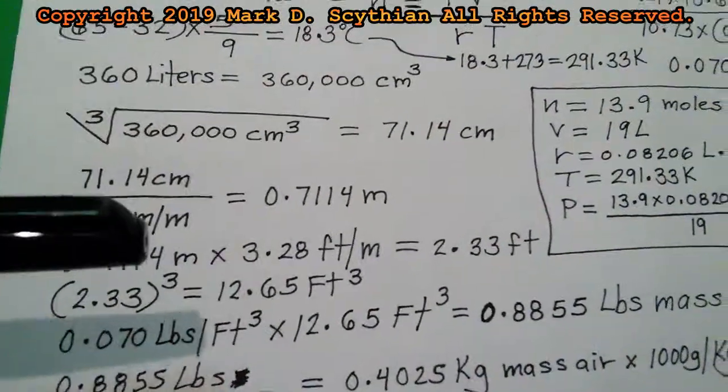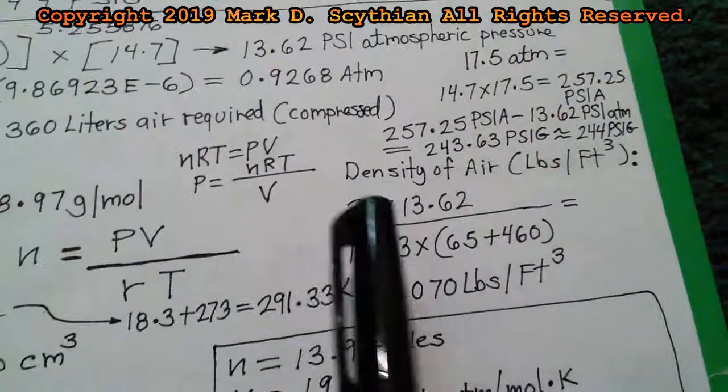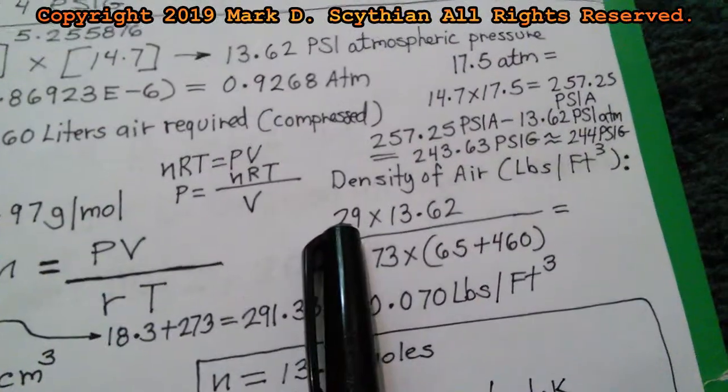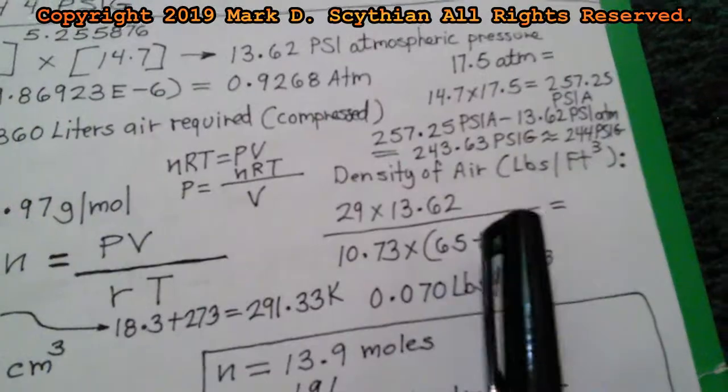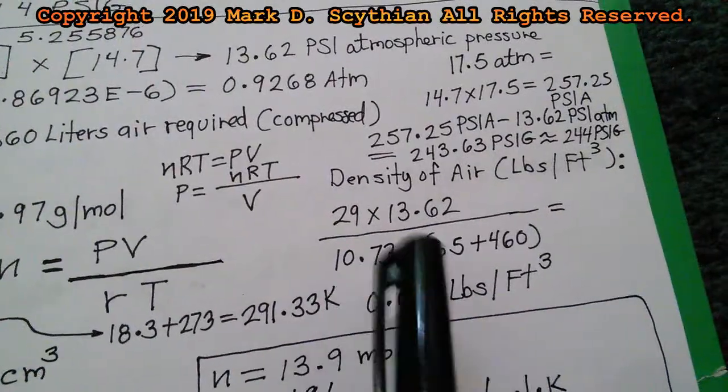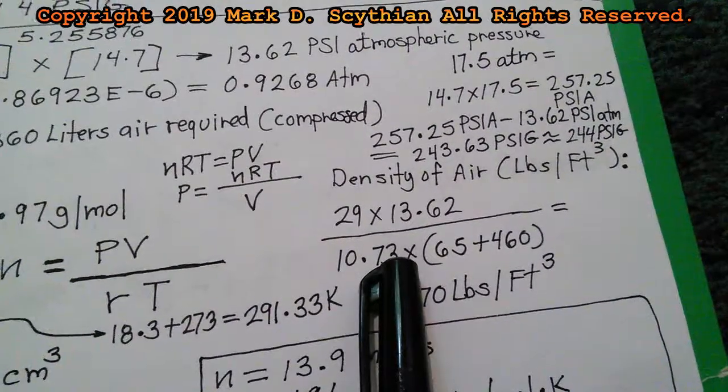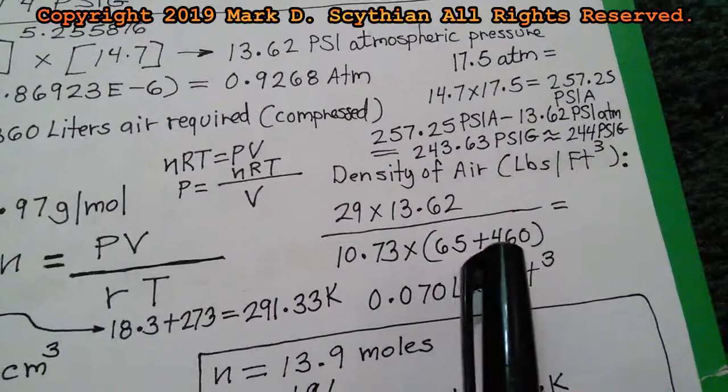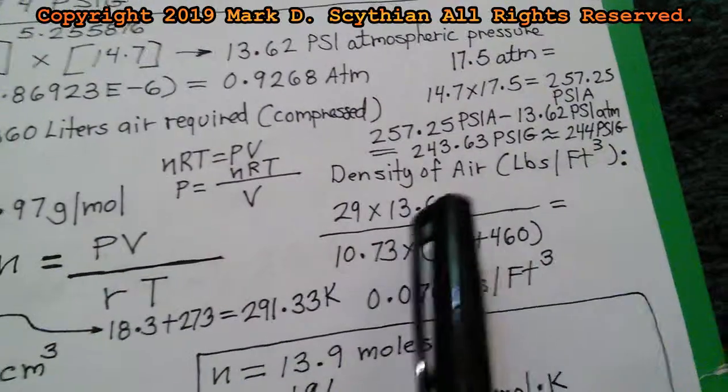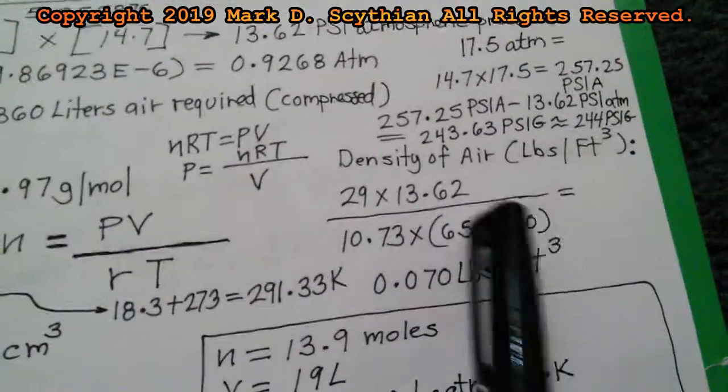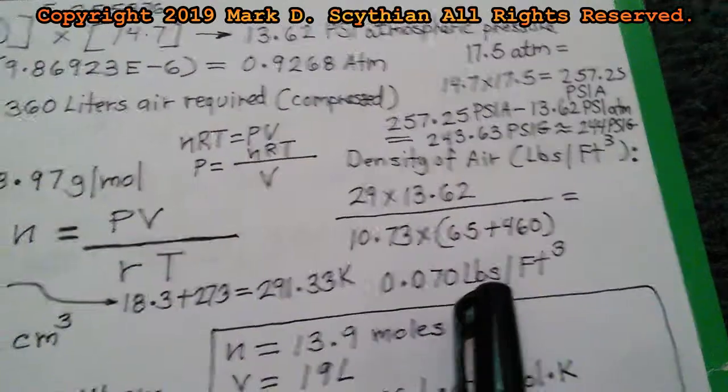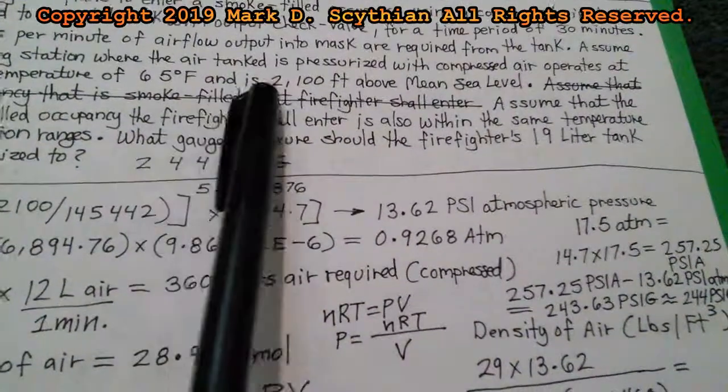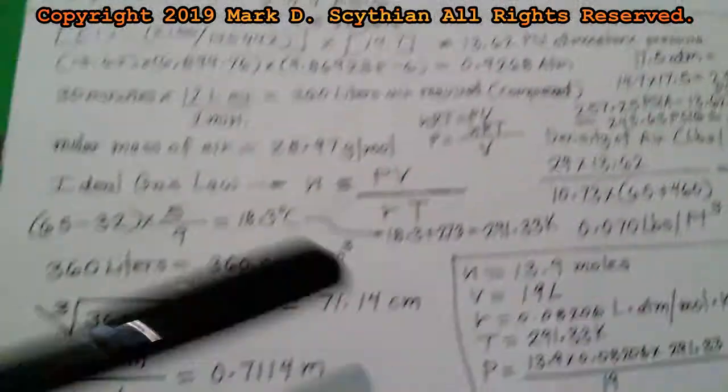Next we can then go up here and solve for the air density in the U.S. English units, 29 constant times the atmospheric pressure, 13.62, divided by the ideal gas law for air, times the Rankin's absolute temperature, which is Fahrenheit plus 460. When we calculate that, we have an air density of 0.070, one at 65 degrees Fahrenheit, 2100 feet above mean sea level.